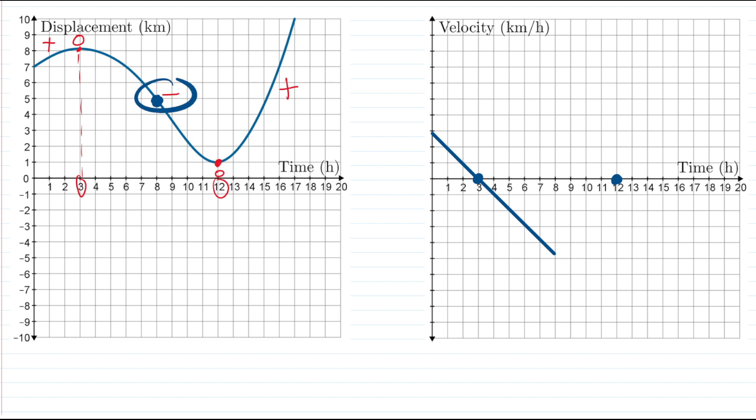Okay, and then from that point where the slopes are most negative, notice they start going back to a slope of zero, which means the velocity graph values, the y values, the velocity values, should go back to zero. And we know that that happens at 12 hours. So we'll have perhaps something that looks like this.